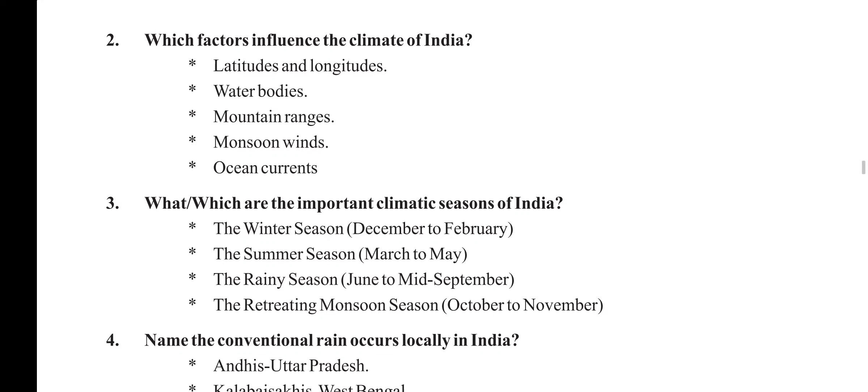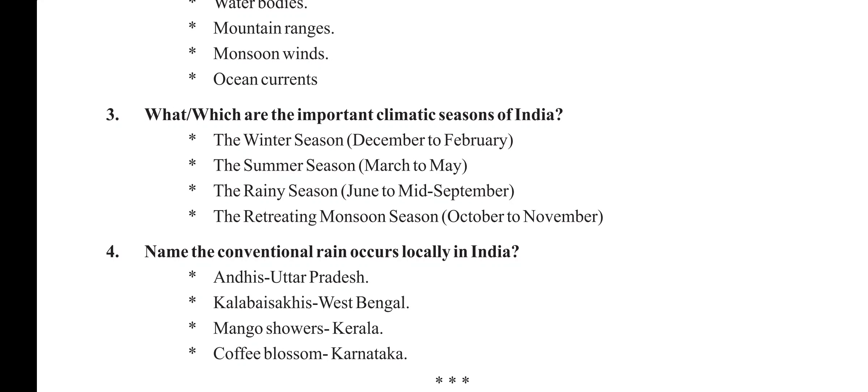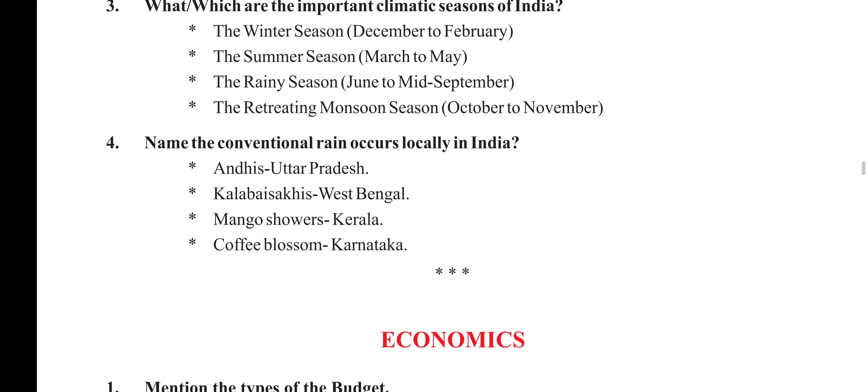What are the important climatic seasons of India? The winter season (December to February), the summer season (March to May), the rainy season (June to mid-September), and the retreating monsoon season (October to November). Name the conventional rains that occur locally in India: Aandhis in Uttar Pradesh, Kalbaisakhis in West Bengal, mango showers in Kerala, and coffee blossom showers in Karnataka.